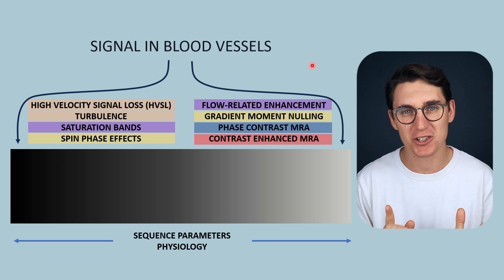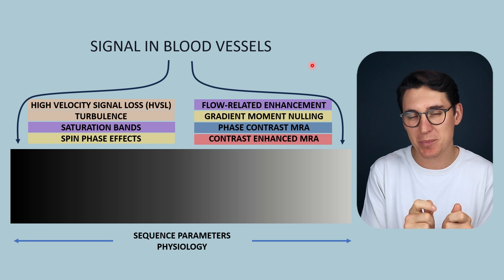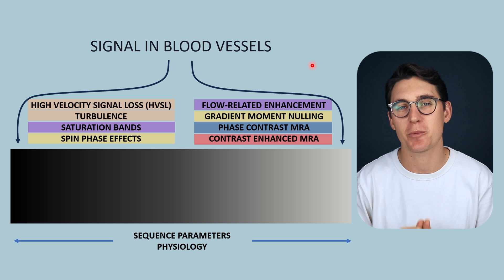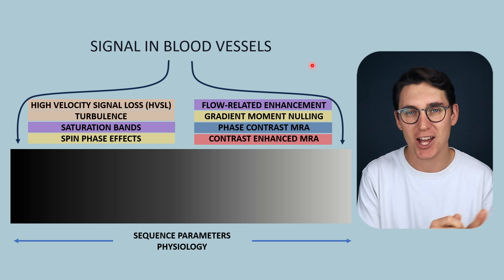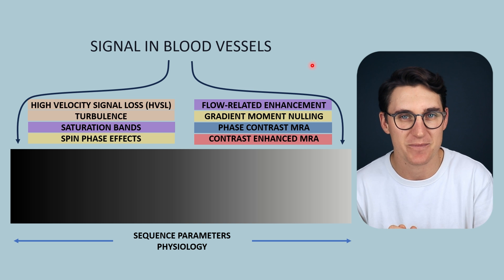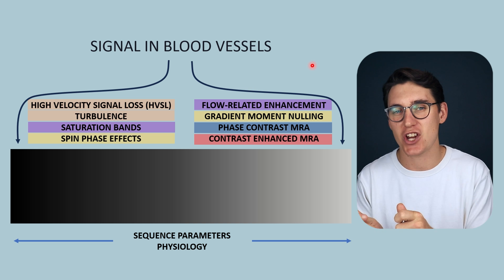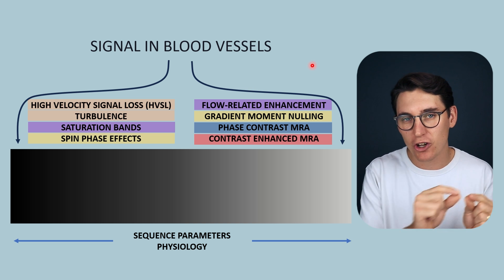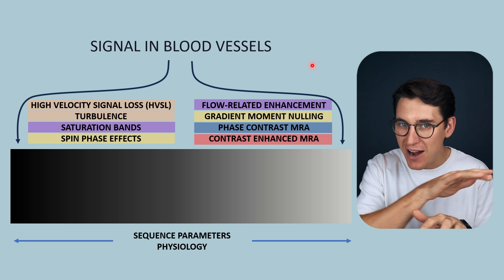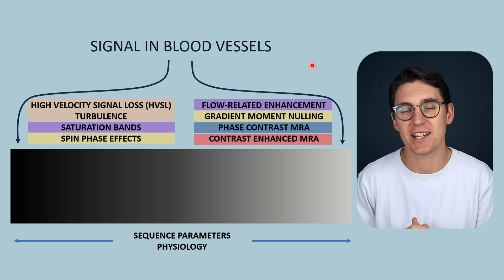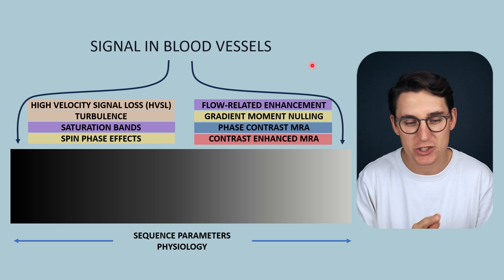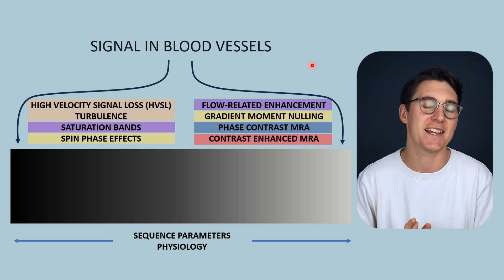Hello everybody and welcome back. We've looked at how a spin moving through a slice whilst applying a gradient across that slice will change phase as it moves across that gradient. The degree of phase change is predictable so long as that spin is moving at a constant velocity parallel to the gradient, and the gradient field strength remains the same. This is what's known as spin phase effects.